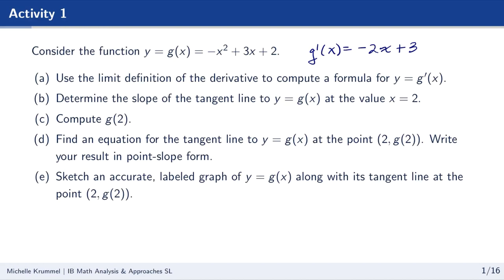Part B: we want to find the slope of the tangent line to y equals g of x at x equals 2. The slope of the tangent line at x equals 2 is just g prime of 2. We substitute 2 into g prime of x: negative 2 times 2 plus 3 equals negative 1. So g prime of 2 equals negative 1.